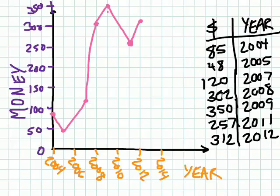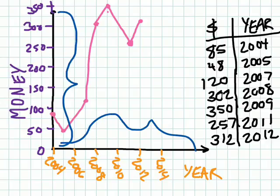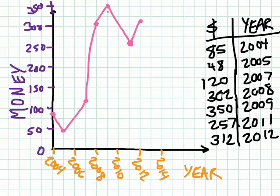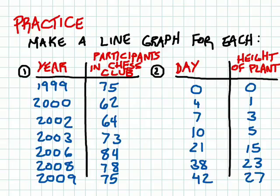Again, big things to remember: consistent scale, consistent scale. You're going to notice all my scales are very consistent. Consistent spacing, consistent counting. So here's some practice problems for you. You've got two sets of data. The first is participants in the chess club by year, and then the second is the height of a plant in days. I'd like you to make a line graph for each one. Pay particularly close attention to your scales. Make sure that they're accurate and consistent on both axes. Good luck.